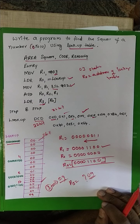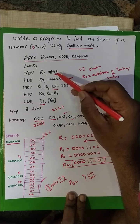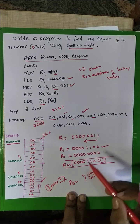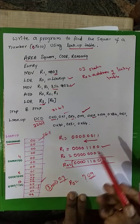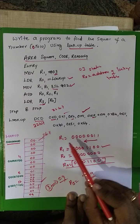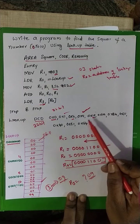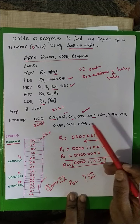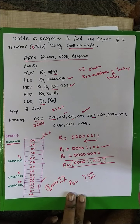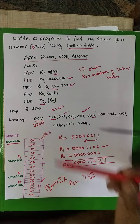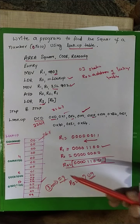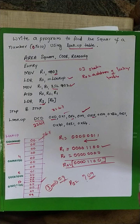So the square of the given number 3 is calculated as 9 using the lookup table. Similarly, for any number from 0 to 10, the program will point to the correct memory location and retrieve the square. This is a very simple program — you can think through it logically and write it easily.